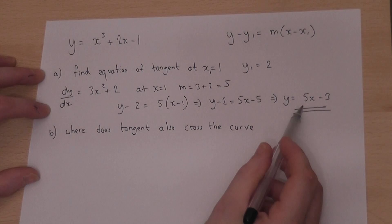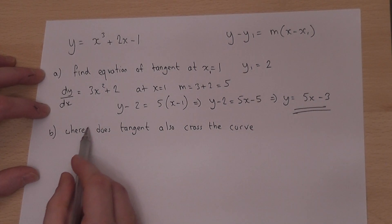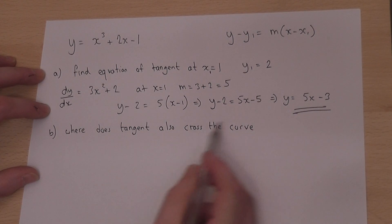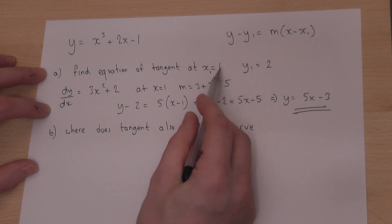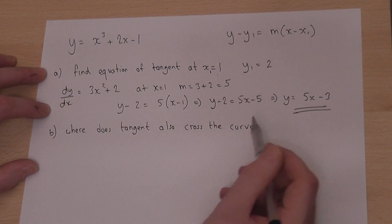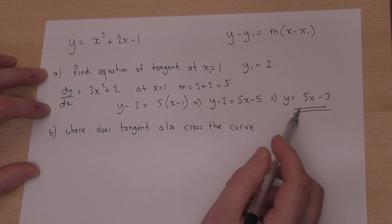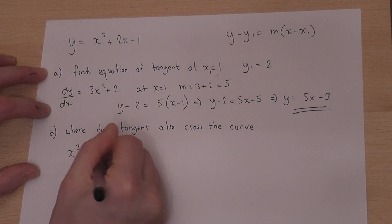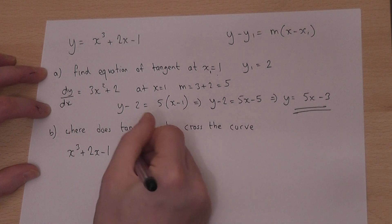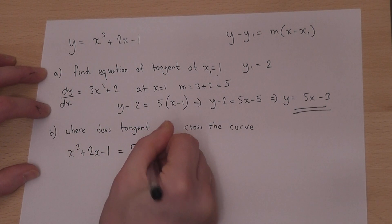So that's the equation of the tangent. The next part asks where the tangent will also cross the curve. So we know that the curve and the tangent meet at x equals 1 by definition. But to find where they also intersect, I must solve these two equations simultaneously. So where they intersect, I know that x cubed plus 2x minus 1 must equal 5x minus 3.